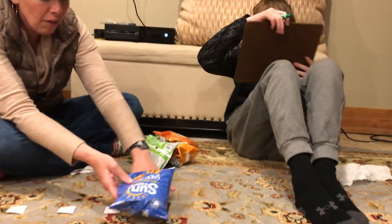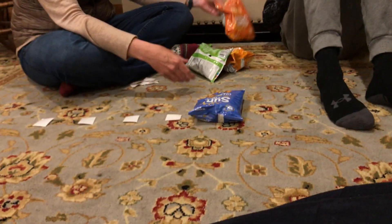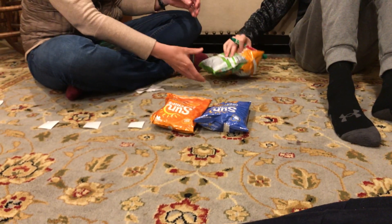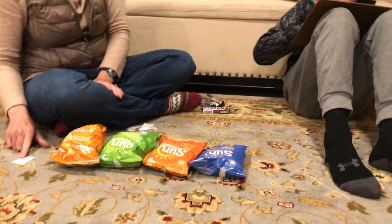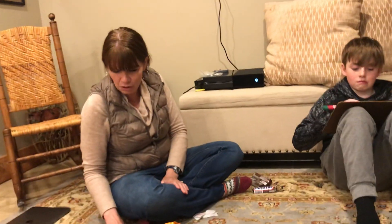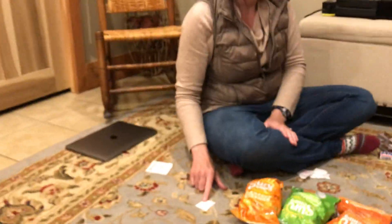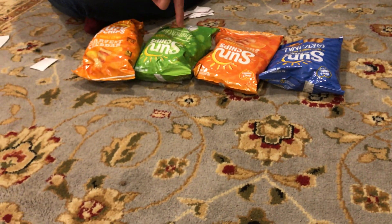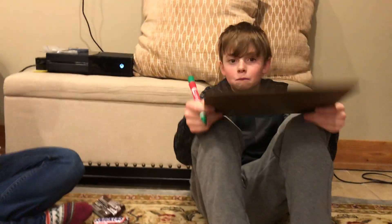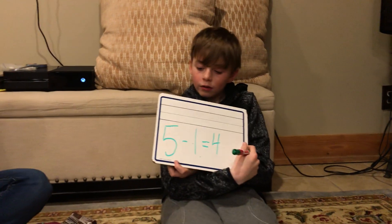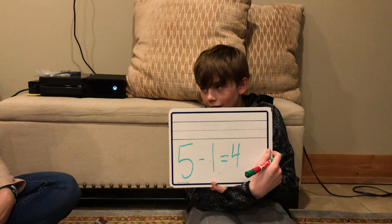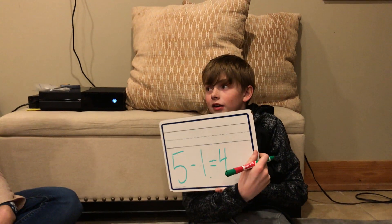So here we go. One, two, three, four. How many are missing? One. So five minus one equals one, two, three, four. Awesome. Charlie, can you read that equation back to us please? Five minus one equals four. Perfect.